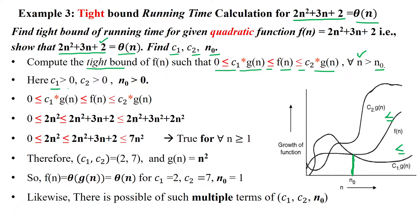Here c1, c2, and n0 are positive numbers, meaning all should be greater than 0. Now we will substitute f(n) in the given terminology. f(n) is 2n² + 3n + 2. The dominating term is n² when comparing to n and the constant 2.